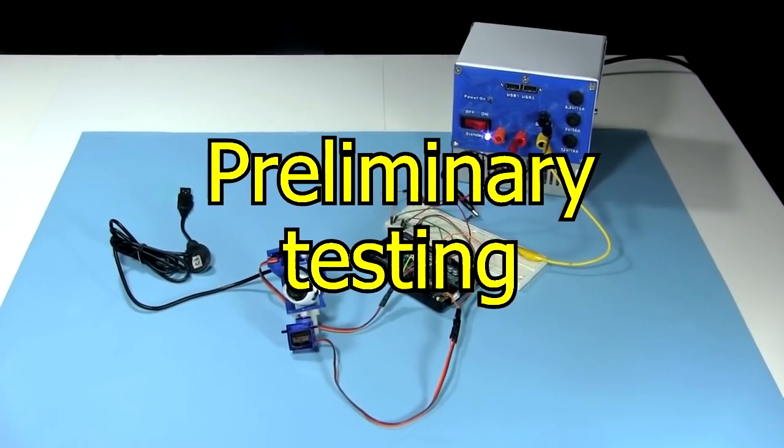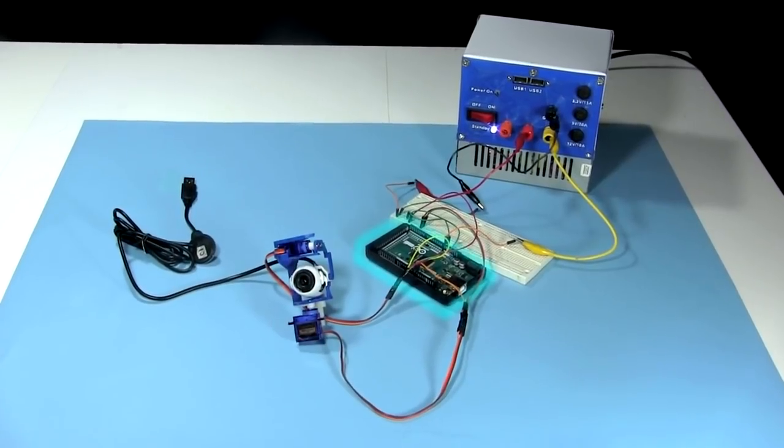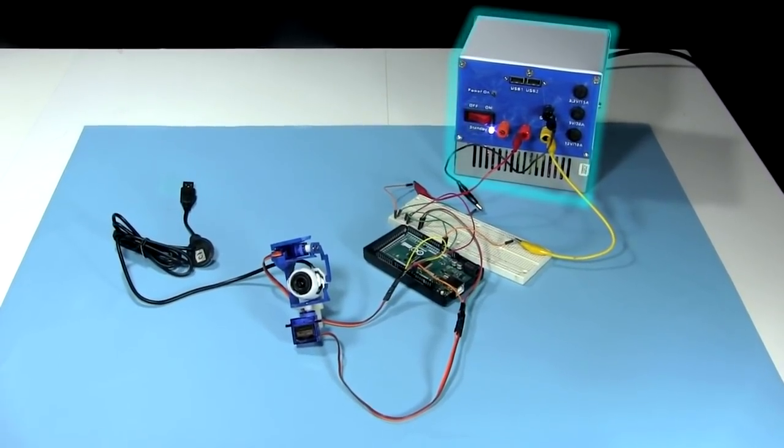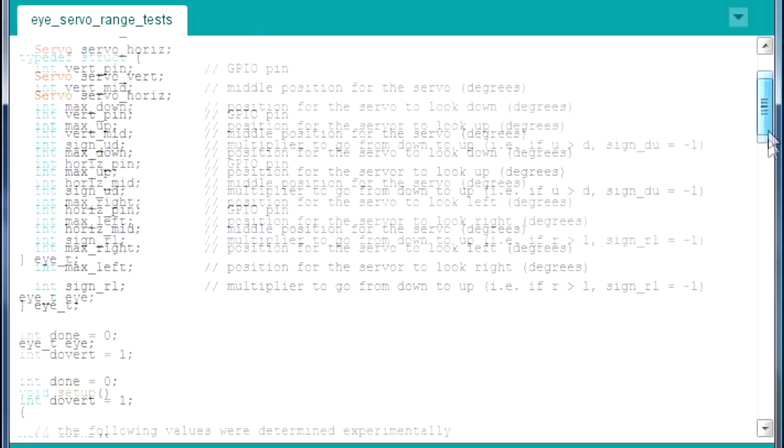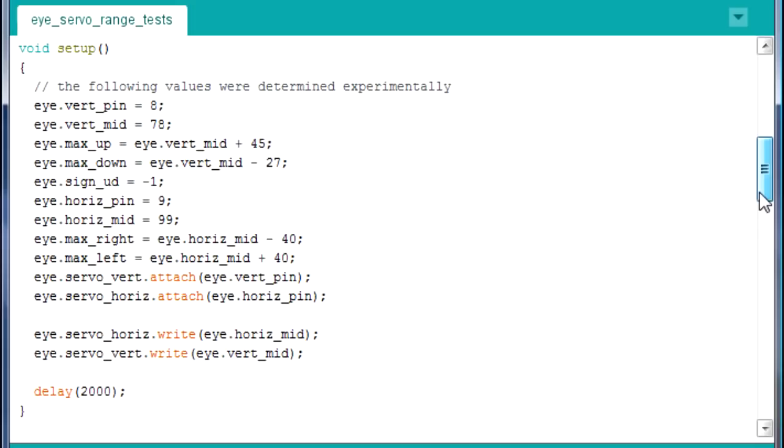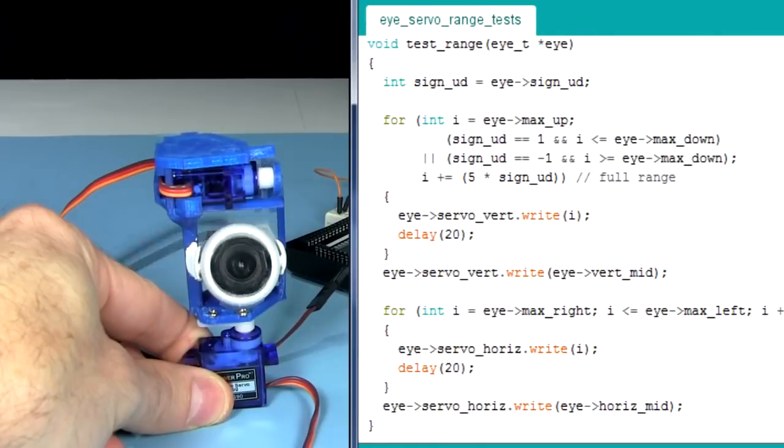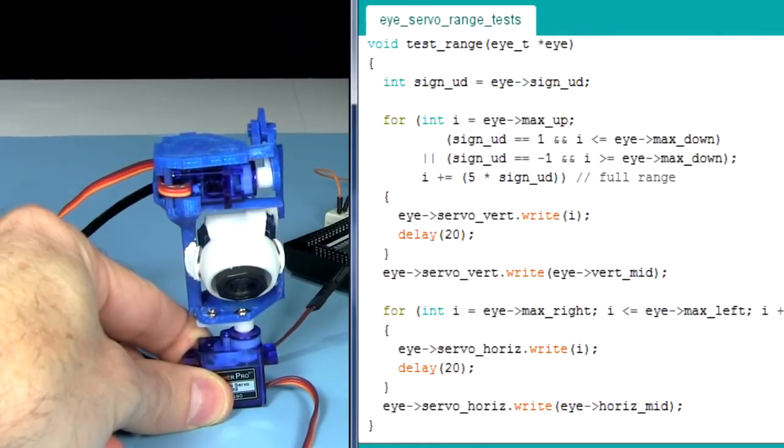Time for some preliminary tests. I've connected the servo motors to my Arduino Mega and to my PC power supply. This is the code. I've defined a structure containing the middle and maximum positions in degrees. The positions were determined by trial and error. I run it through a simple routine which moves through a simple sequence.